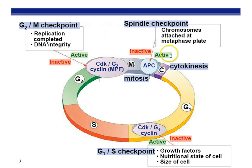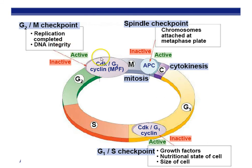Here we have the checkpoints. The G1 checkpoint involves the P53 gene. CDKs and cyclins are proteins that regulate this, though we won't go into details here. The G2 checkpoint makes sure that DNA replication during S phase was completed and the DNA is ready for mitosis. The M checkpoint happens right before metaphase to make sure chromosomes are properly attached at the metaphase plate.